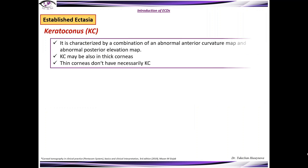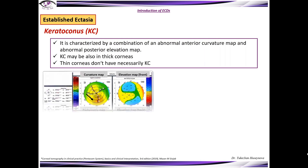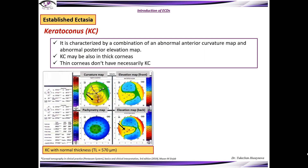Keratoconus is characterized by a combination of an abnormal anterior curvature map and an abnormal posterior elevation map. Importantly, keratoconus might also occur in thick corneas. As you can see here, the patient has an abnormal curvature map and abnormal posterior elevation map; however, the thickness is 570 microns, which is higher than average.